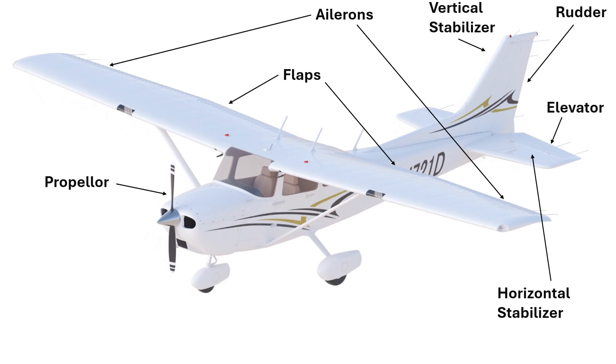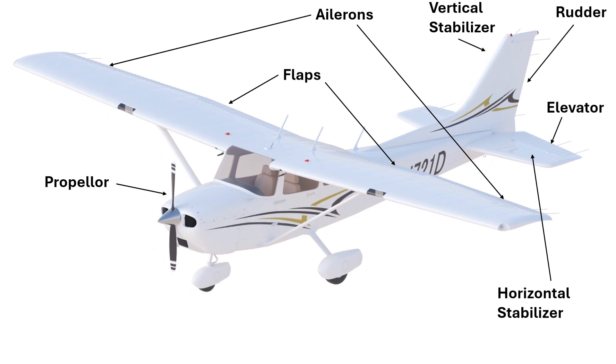On the wings we have the ailerons on the outer part of the wing and flaps on the inner part of the wing. The power plant at the front of the aircraft houses the engine and propeller to give the airplane thrust while in flight.